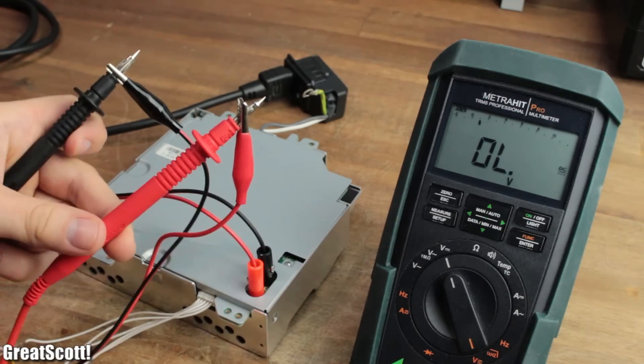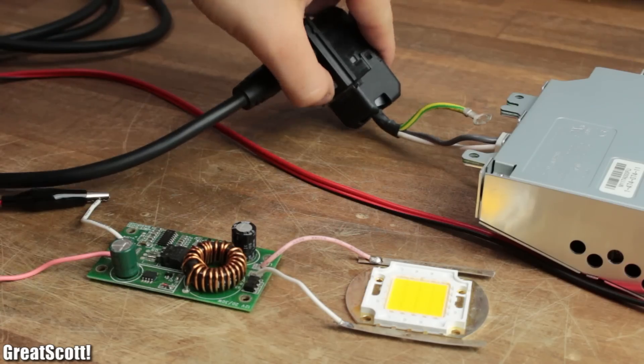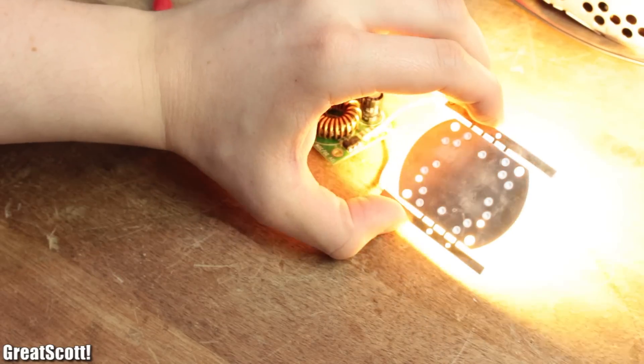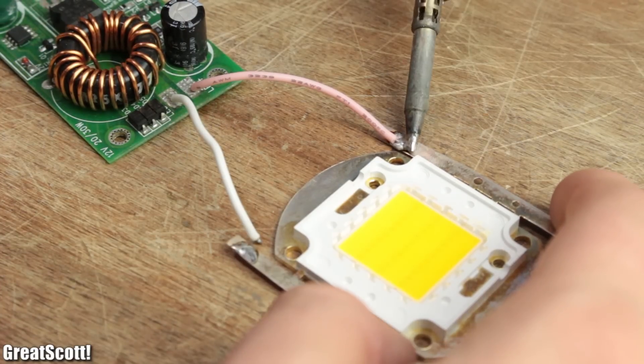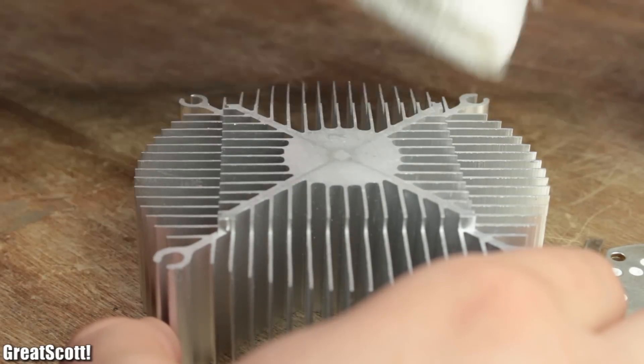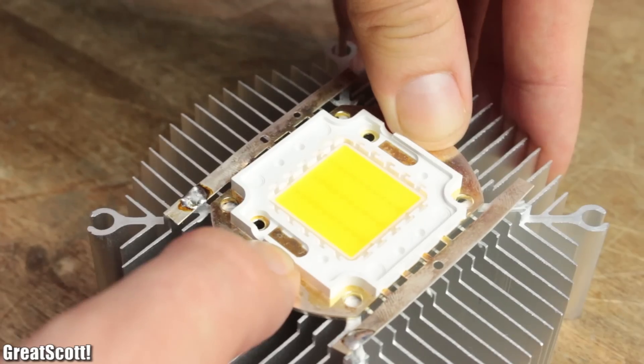And don't worry, I will show you where I salvaged it from during next week's episode. The circuit then drew around 4 amps to light up the LED properly. But as a side effect, the temperature of it also increased slowly. To keep the LED cool and therefore expand its lifespan, I firstly cleaned the contact area of the heatsink and LED with acetone and then used thermal glue to bond them together.